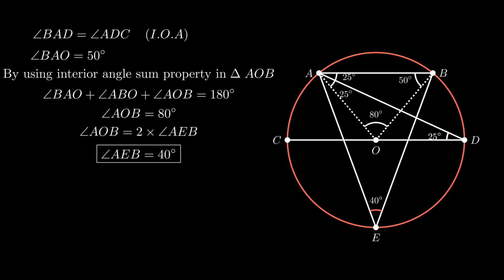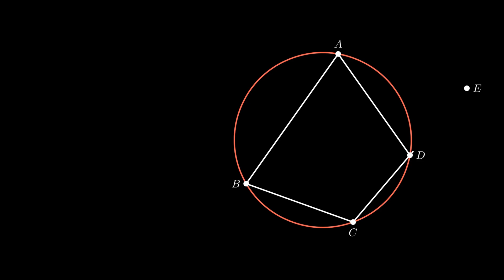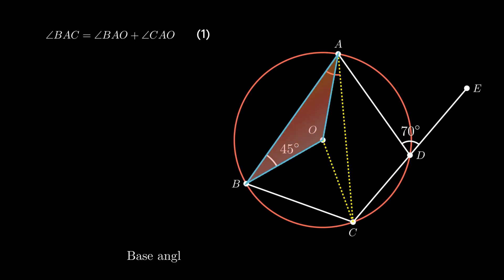Moving on to the next one. Consider a cyclic quadrilateral ABCD. Side CD is extended to point E such that angle ADE equals 70 degrees. It is also given that angle OBA measures 45 degrees. We need to find the value of angle BAC. In order to do so, join point C and point A to center point O. As triangle AOB is an isosceles triangle, base angles are equal, hence angle BAO measures 45 degrees.